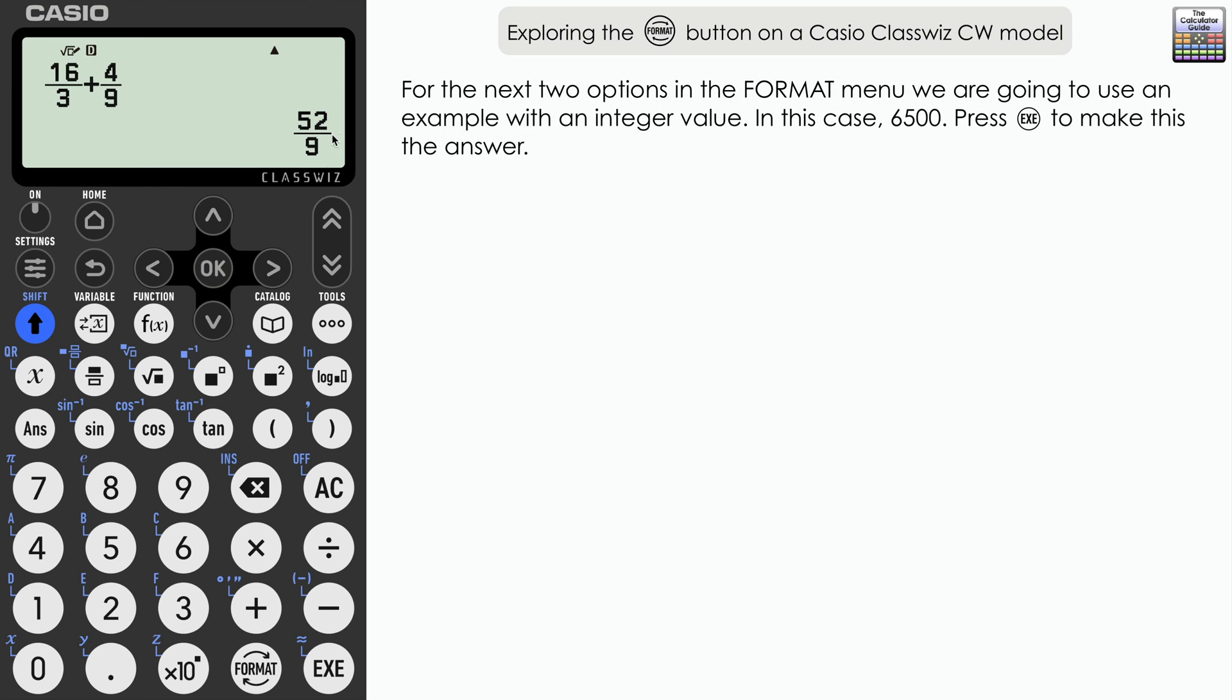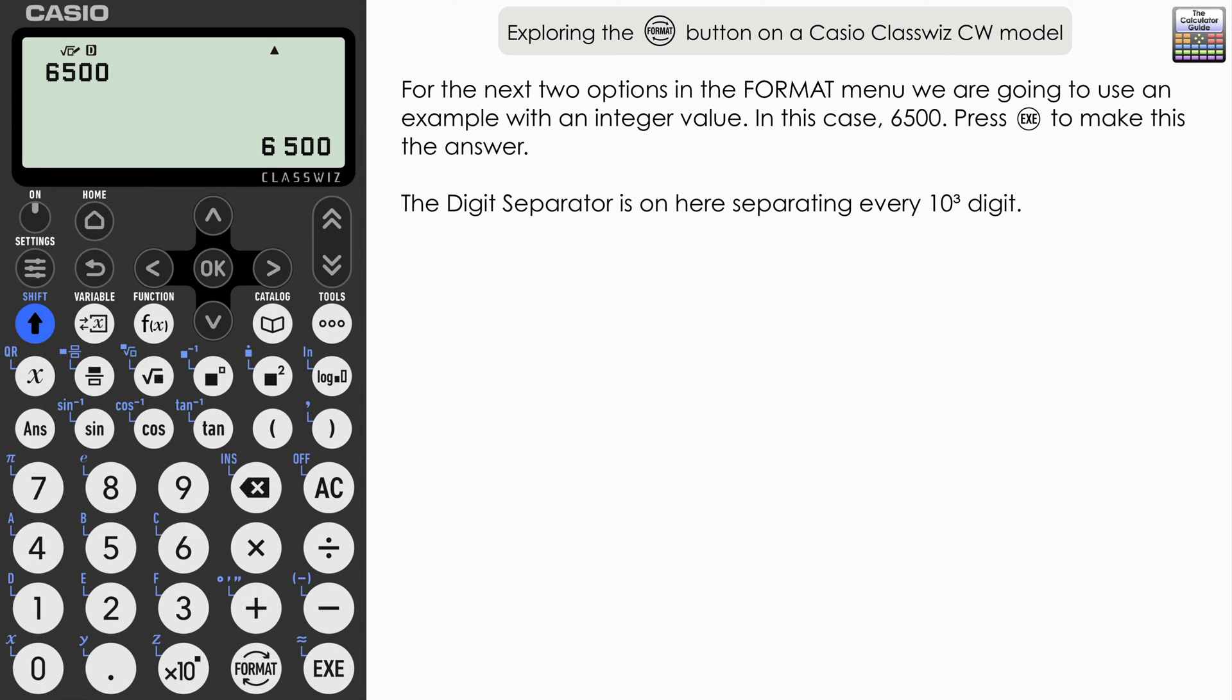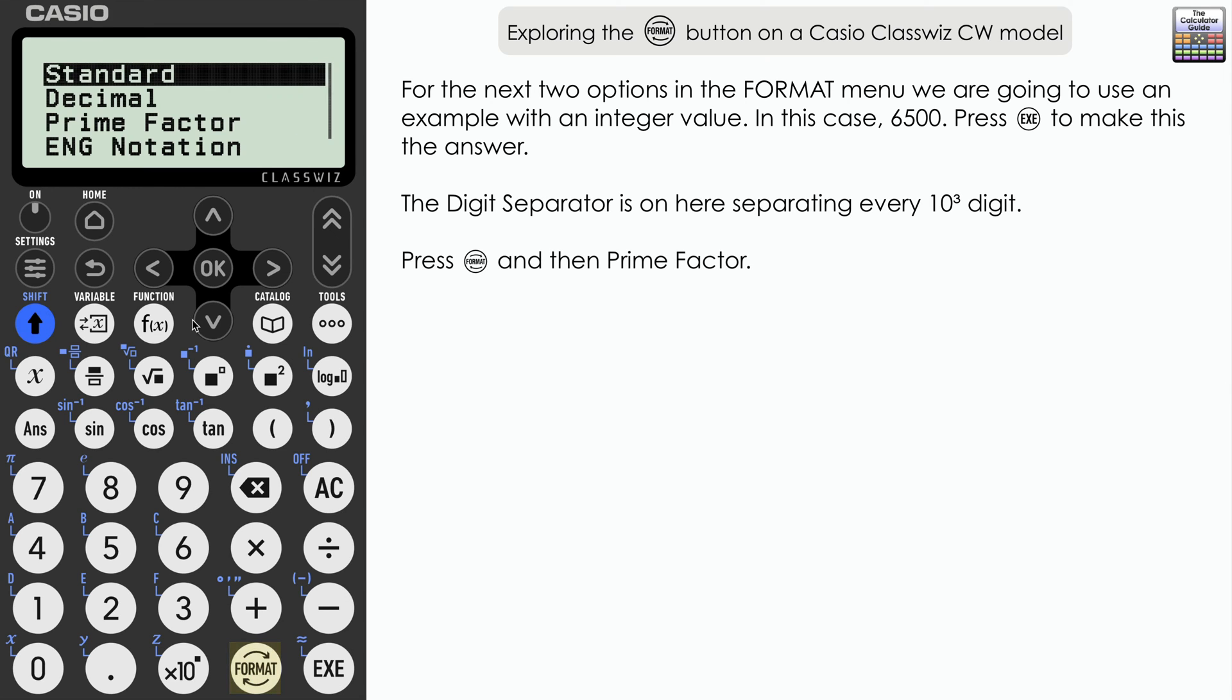For the next two format options, I'm going to choose an integer value. I'm going to just input 6,500 and demonstrate how they work. Press execute. You can see here actually incidentally that I've got the digit separator on here that separates thousands or groups of thousands. So 6,000, the six is separated from the 500. Press format. And you can see we've got an option here of prime factor that we didn't have with the fraction there.